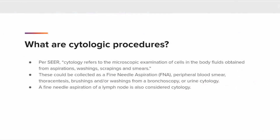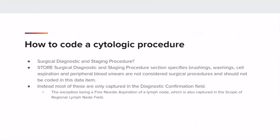What are cytologic procedures? Per SEER, cytology refers to the microscopic examination of cells in body fluids obtained from aspirations, washings, scrapings, and smears. These can be collected as a fine needle aspiration (FNA), peripheral blood smear, thoracentesis, brushings, and/or washings from a bronchoscopy, or urine cytology. A fine needle aspiration of a lymph node is also considered cytology. Once you've determined the case is reportable and the date of diagnosis, most cytologic procedures are only captured in the diagnostic confirmation field — they are not recorded as a surgical diagnostic and staging procedure, as STORE specifies these are not surgical. The exception is a fine needle aspiration of a lymph node, which is also captured in the scope of regional lymph node field.